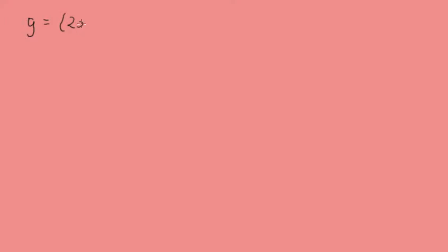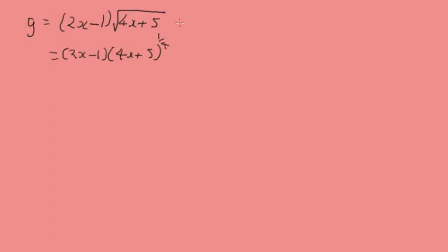Let's look at some examples. We want to find dy by dx when y equals (2x minus 1) times the square root of (4x plus 5). We can rewrite this as (2x minus 1) times (4x plus 5) raised to the power of a half.